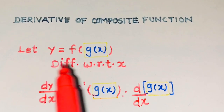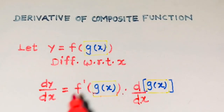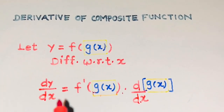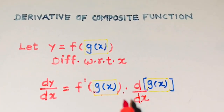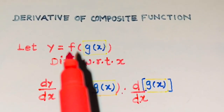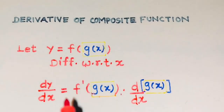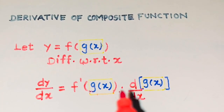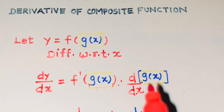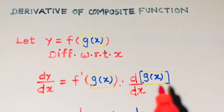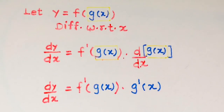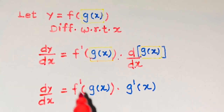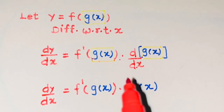Now I want to differentiate y with respect to x. So let's apply the derivative on the left-hand side, which gives dy upon dx. On the right-hand side, the function is f — let's apply the derivative to f, and this box meaning g of x remains as it is, into the derivative of that box. In the next step, we remove the derivative of the box, meaning g of x.